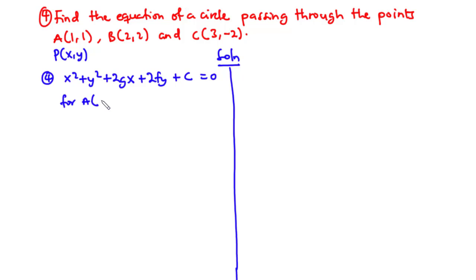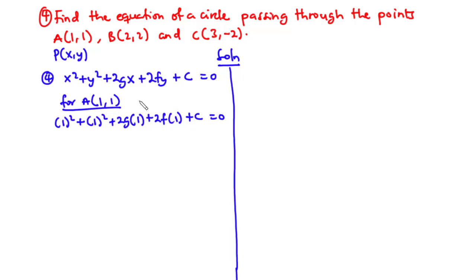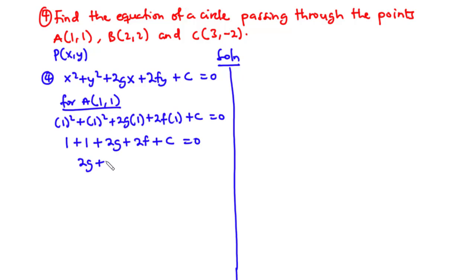For point A(1,1), we substitute 1 and 1 in place of x and y: 1 squared plus 1 squared plus 2g times 1 plus 2f times 1 plus C equals 0. We are forming three equations using points A, B, and C to find the values of g, f, and C. Simplifying: 1 plus 1 plus 2g plus 2f plus C equals 0, giving us 2g plus 2f plus C equals negative 2. Call this Equation 1.